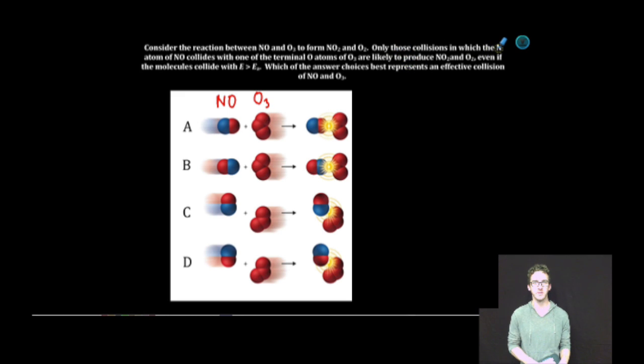Next, we're told that only those collisions in which the nitrogen atom of NO collides with one of the terminal O atoms of ozone. So let's take a look at option A. Here it shows a molecule of NO colliding with the central atom of ozone. A collision occurs, this is an example of an ineffective collision. Wrong answer.